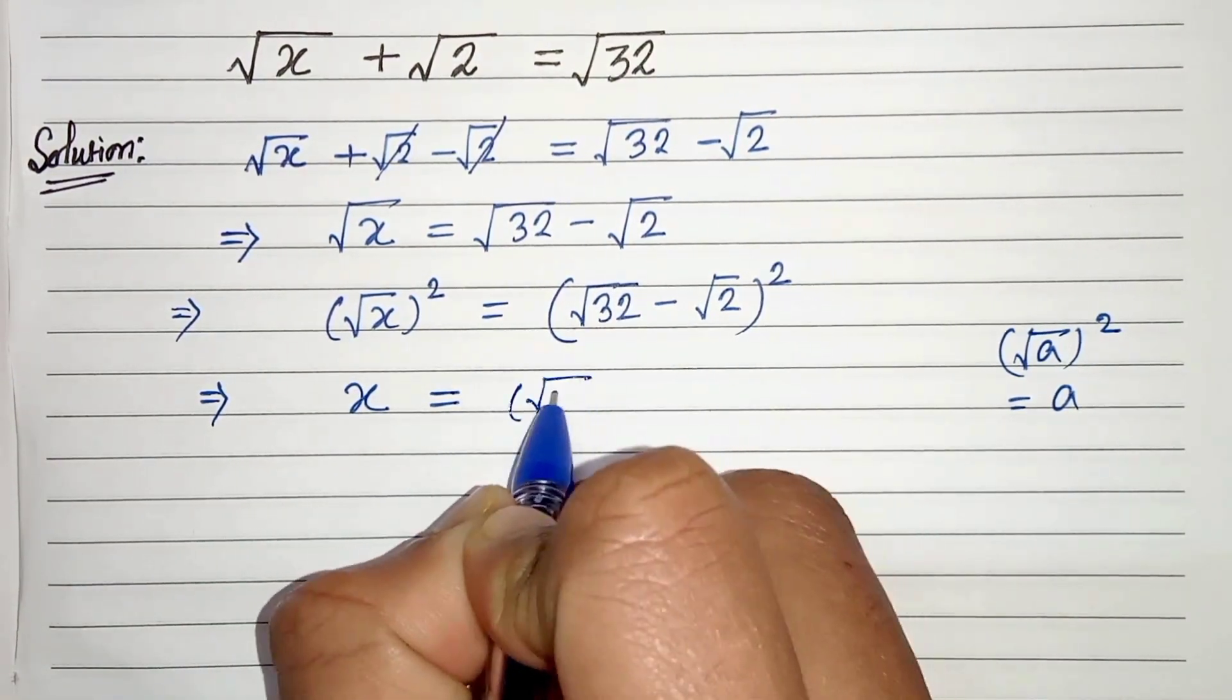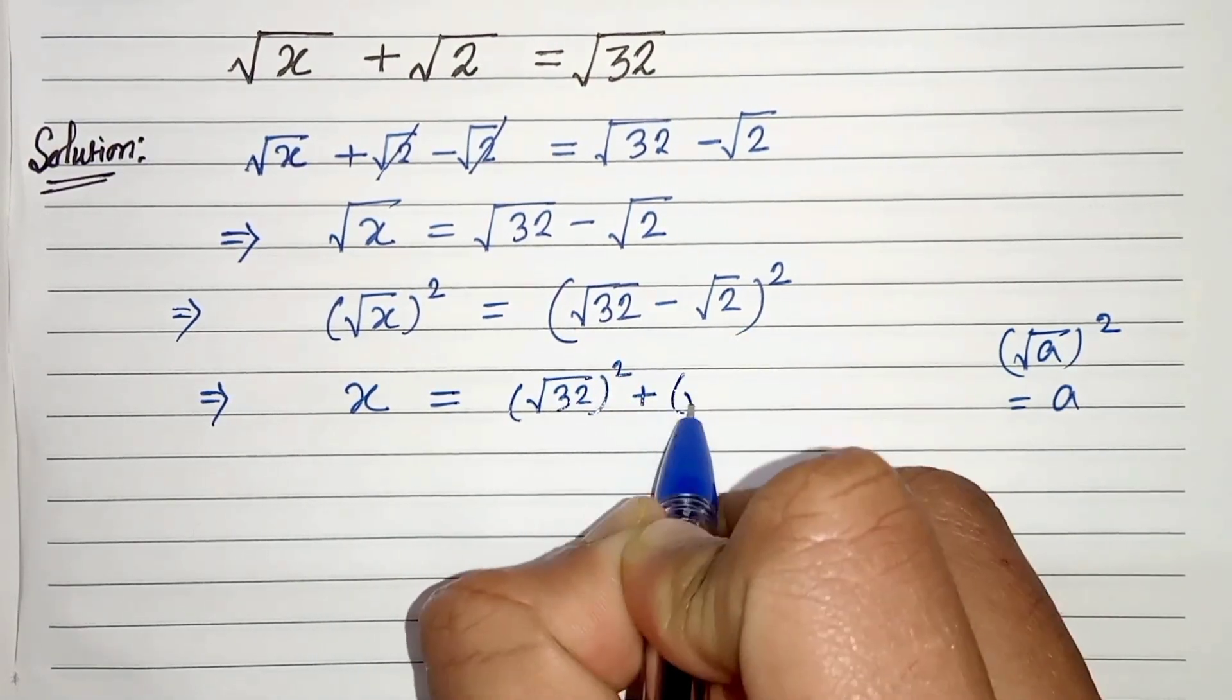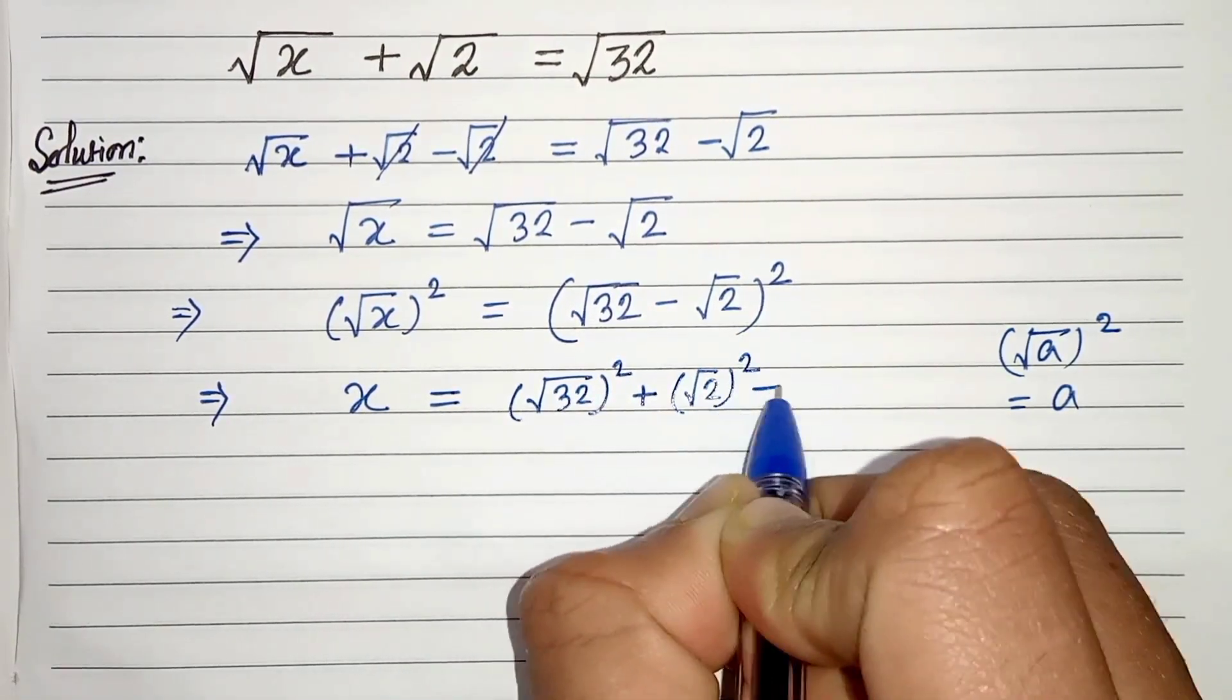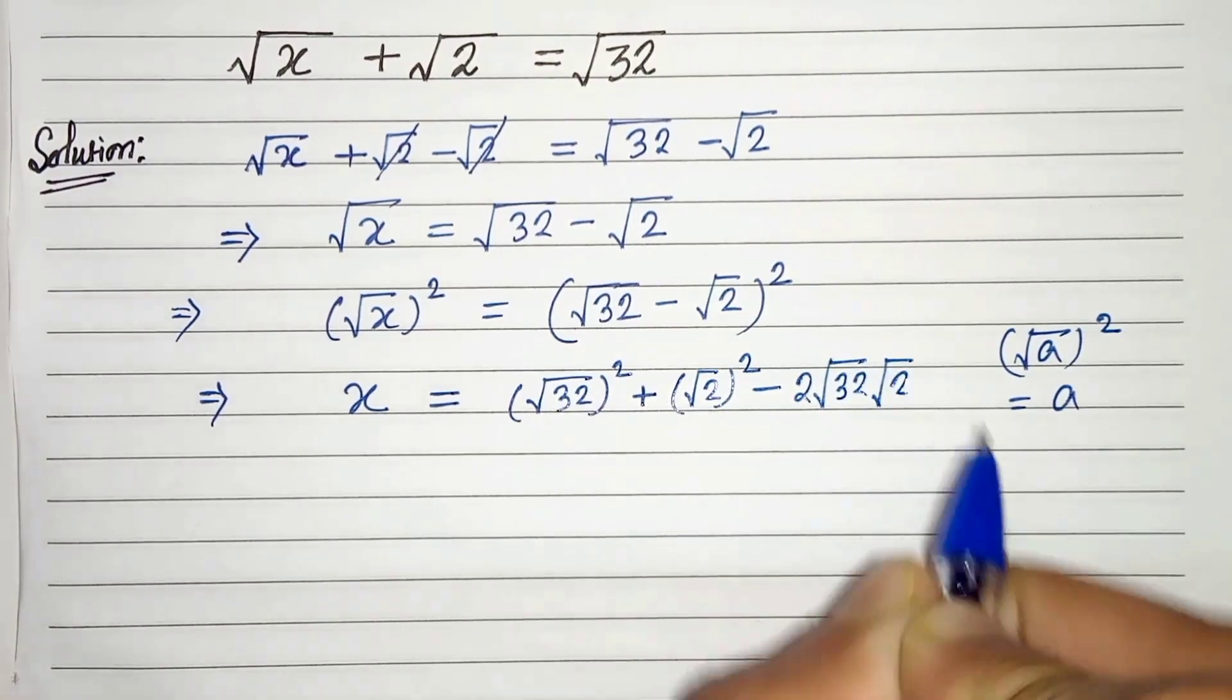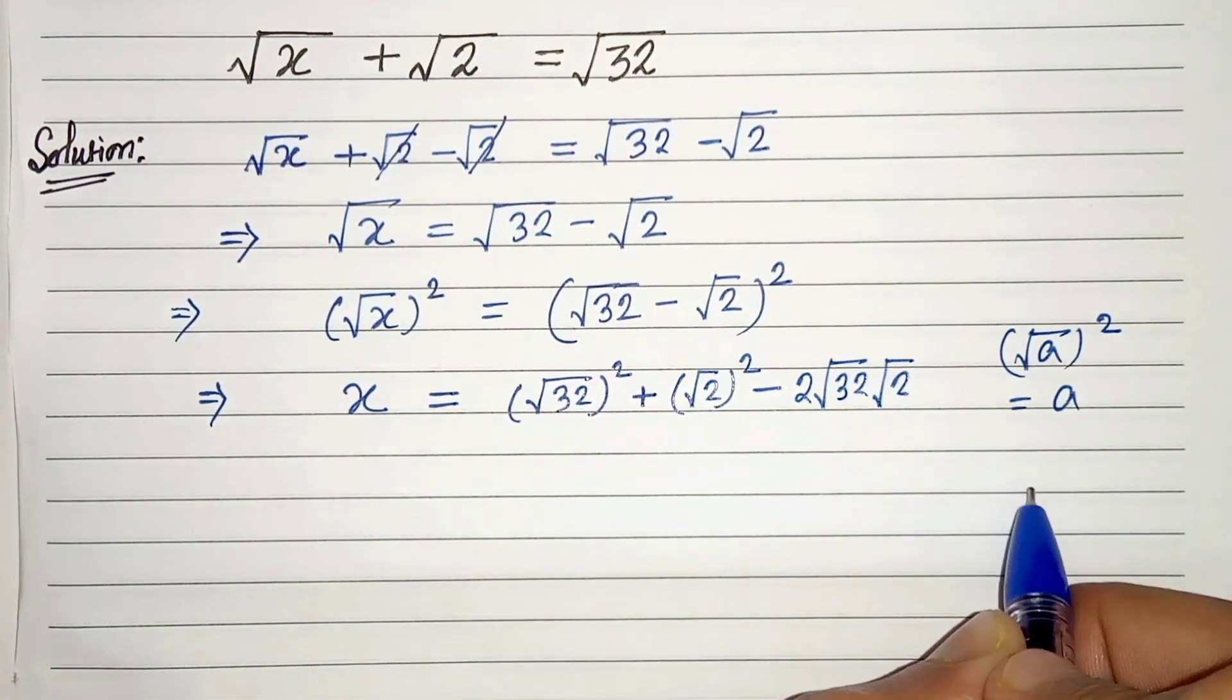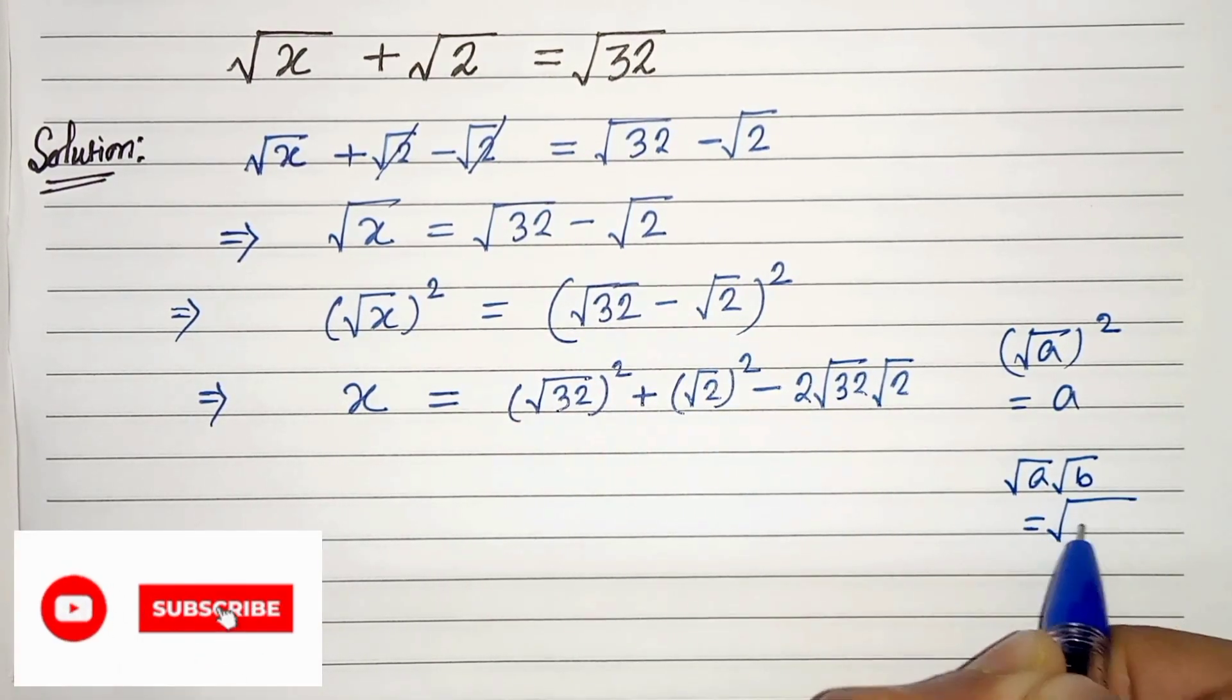So a² is (√32)² plus b² is (√2)² minus 2ab which is √32 times √2. And we know that √a times √b can be written as √(ab).